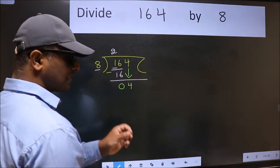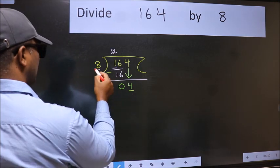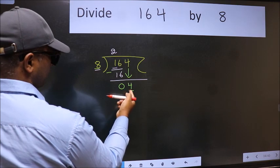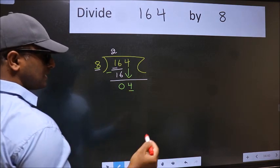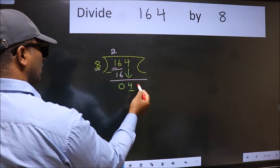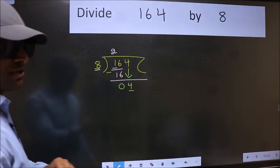And the mistake is this: here we have 4 and here 8. 4 is smaller than 8. So what many do is they directly put the decimal point and take 0, which is wrong.